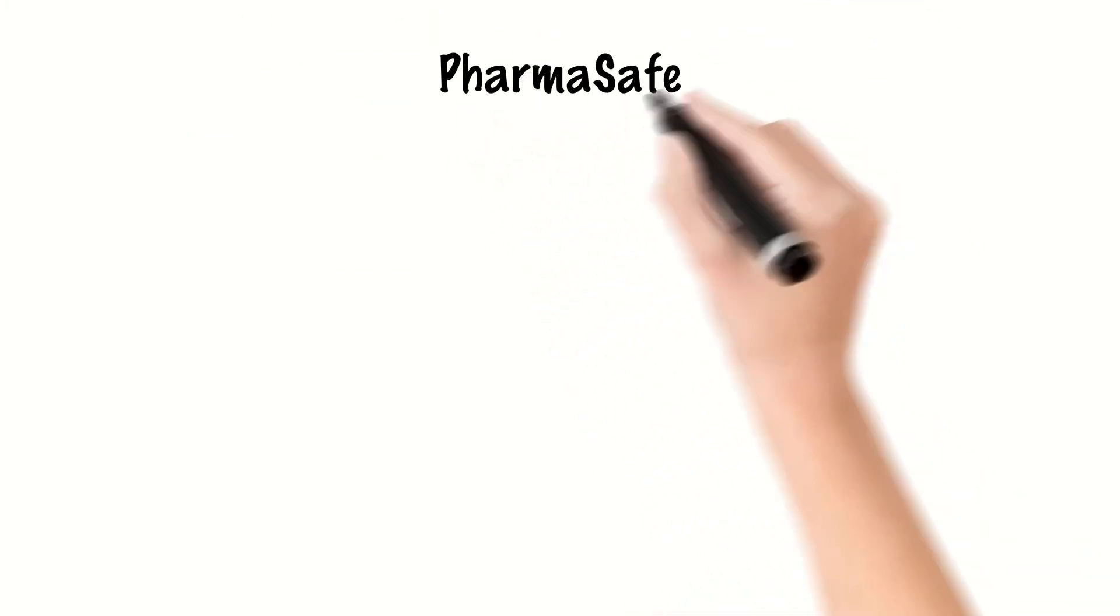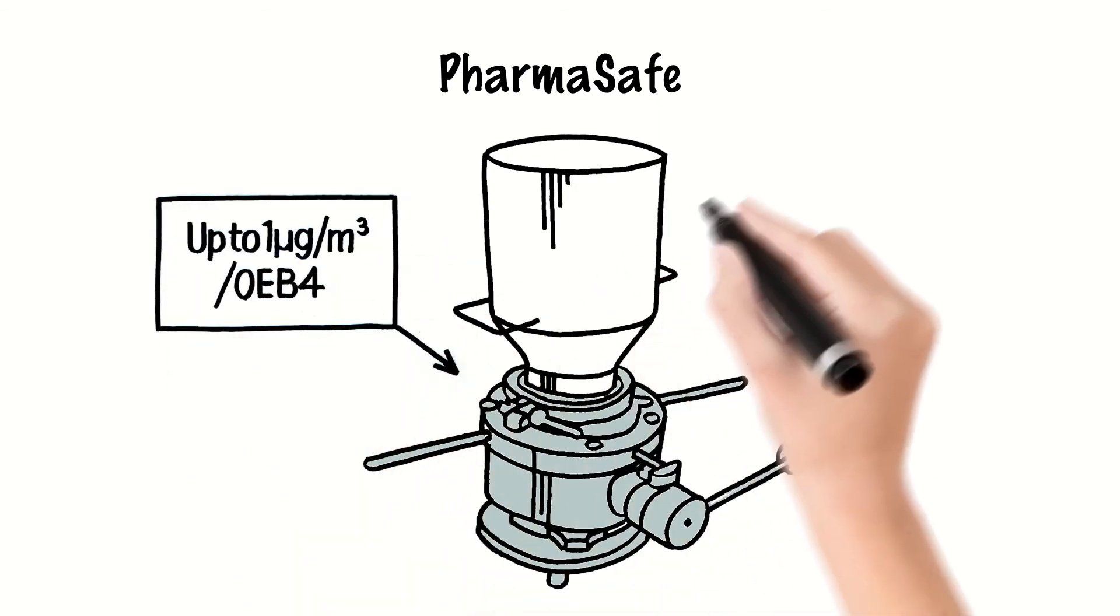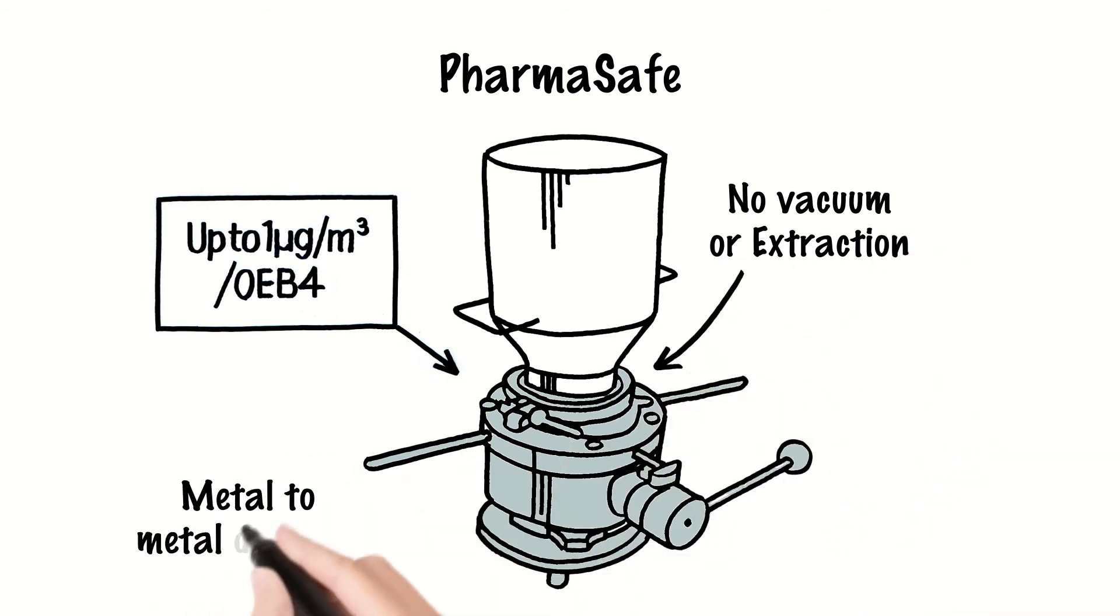The entry-level PharmaSafe offers containment performance up to one microgram per meter cubed with no extraction or additional disc seals required.